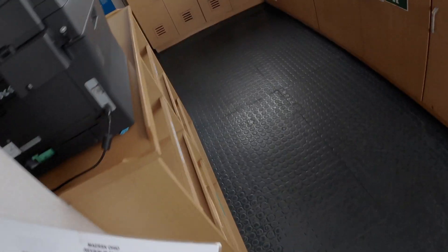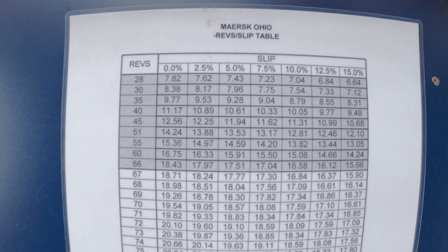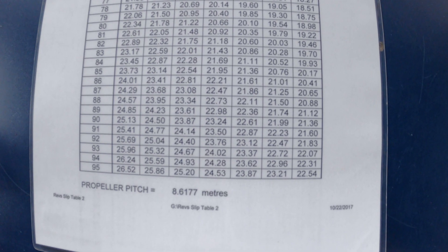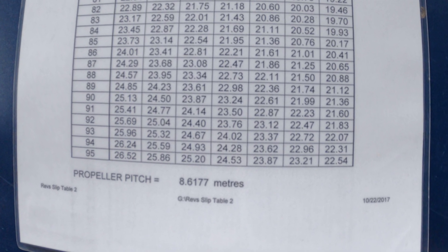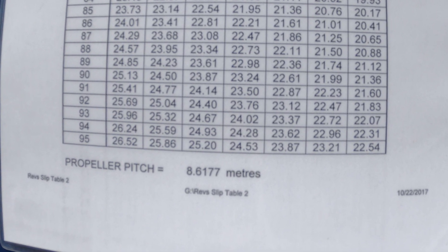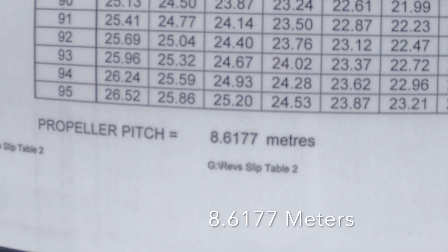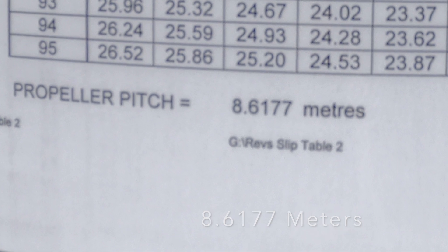Finally, we need to know the pitch of the propeller on this ship. Pitch refers to the distance the ship should move for every revolution with 100% efficiency. No ship will have 100% efficiency though, because water produces drag against the ship and propeller, so the propeller never actually reaches its full pitch. The pitch is conveniently recorded here and is 8.6177 meters.